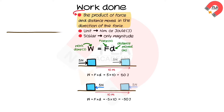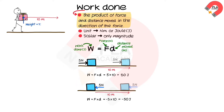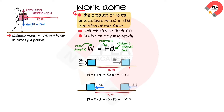When a person walks 10 meters while holding a box weighing 10 Newtons, the person exerts a force of 10 Newtons to hold the box, but the box moves forward in a direction perpendicular to the force. Therefore, the work done by the person holding the box is 0.